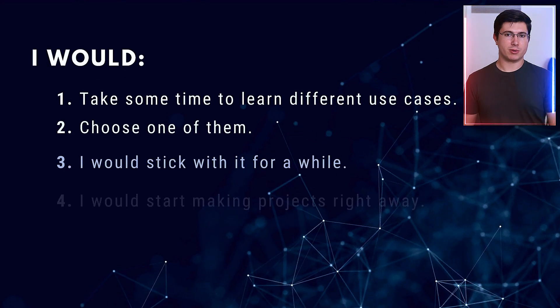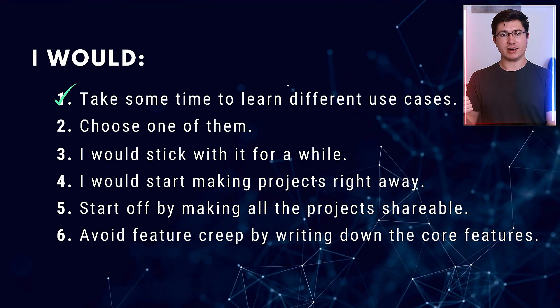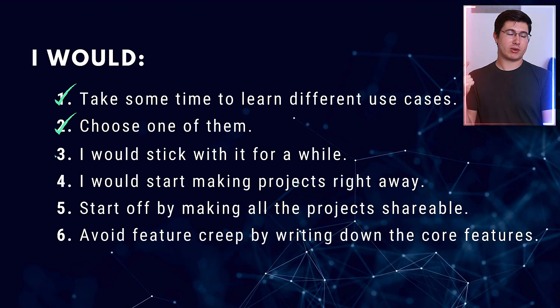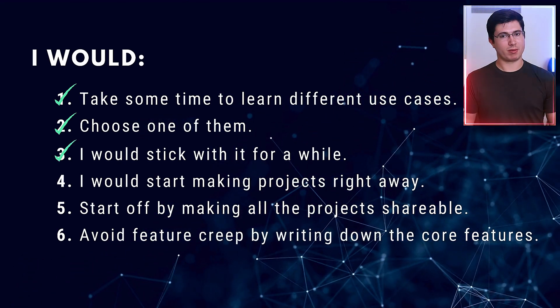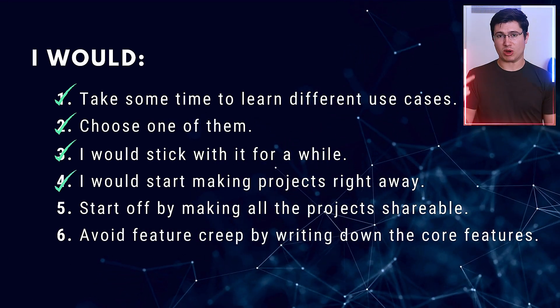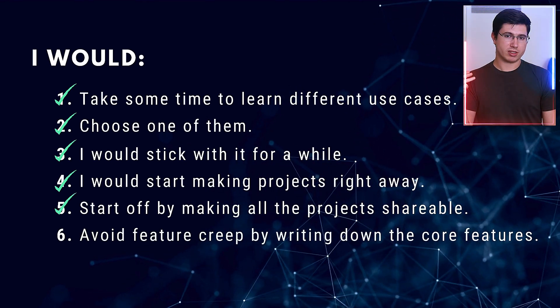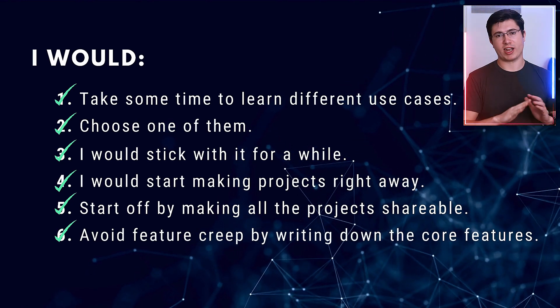Those are the five main mistakes that I made when learning to program. So if I were to start over, I would basically inverse this list — I'd take some time to learn different use cases for the most popular programming languages and the pros and cons, then just choose one and stick with it while avoiding any shiny new languages. Then I would start making projects right away, make them more often to learn new concepts, start off by making all projects shareable, and avoid feature creep by writing down the core features and finishing those first before adding anything else.